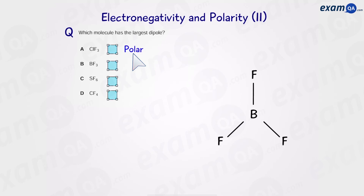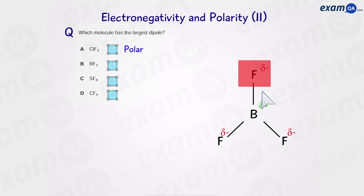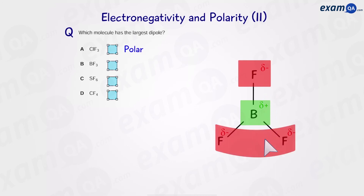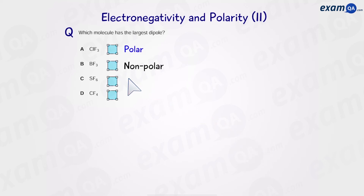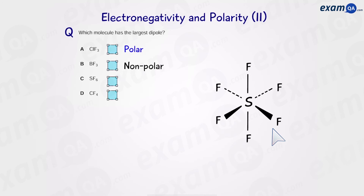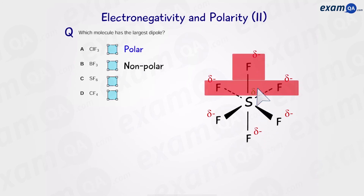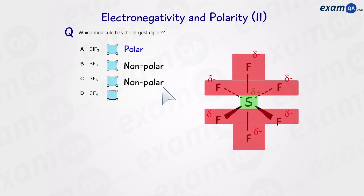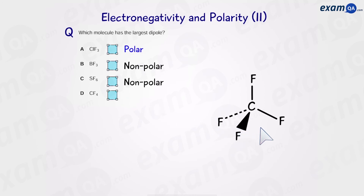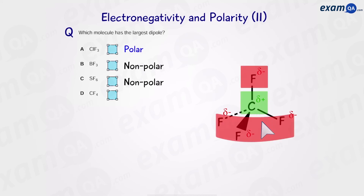Moving on to B, boron trifluoride: the boron-fluorine bond is polar on the Pauling scale. Boron trifluoride has a trigonal planar shape, so we have a negative side at the top, positive in the middle, and negative at the bottom — so overall it is nonpolar. Moving on to C, sulfur hexafluoride, SF6: this has an octahedral shape. The bonds are polar, but starting from the top we have negative, negative all around, positive in the middle — so overall nonpolar. And D, tetrafluoromethane, CF4: we know the bonds are polar, but we have negative, positive, and negative — so it is also nonpolar.